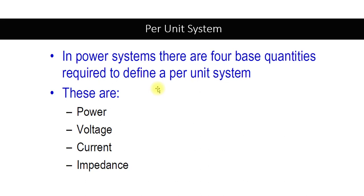Similarly, a transformer will have its own capacity — it may be 100 MVA, 50 MVA, 40 MVA, or 20 MVA. The voltage at the generation level will be different, and the voltage at the transmission level will be different. So it becomes very difficult to convert quantities at each instance and move on to the next step.